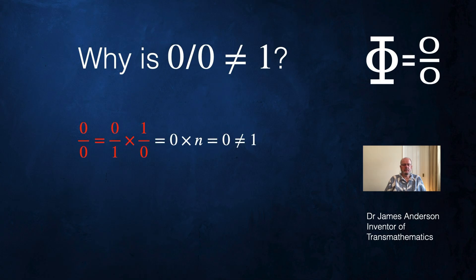Let's try another reason. Zero over zero equals zero over one times one over zero. If we assume that one over zero is some number n, then zero times n equals zero. Zero is not equal to one, so zero over zero is not equal to one.